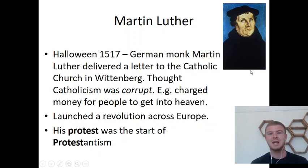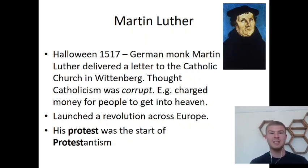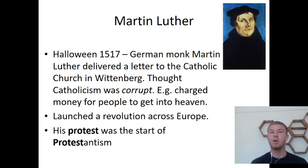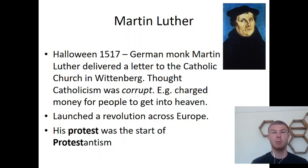This is Martin Luther — what a fantastic hat he's wearing. On Halloween in 1517, Martin Luther, who was a German monk, delivered a letter to the Catholic Church in a place called Wittenberg. On his letter, he said a list of things that he thought were wrong about how the Catholic Church was behaving. He thought the Catholic Church was corrupt — corruption is one of our key words — and they were not behaving as they should. For instance, they were charging people money to get into heaven, saying you can behave how you like but as long as you pay the church some money, they'd let you go straight to heaven. He launched a revolution across Europe and lots of people suddenly wanted to follow Protestantism rather than Catholicism. The key part of that word is protest, and that was the start of Protestantism.